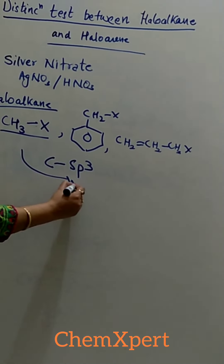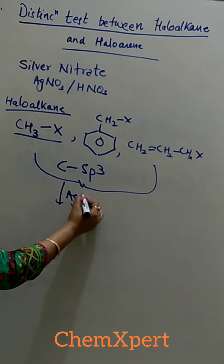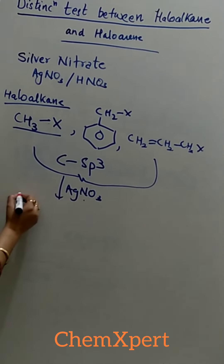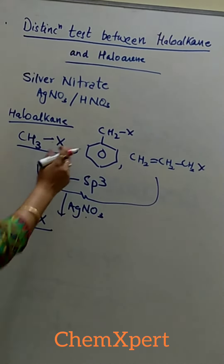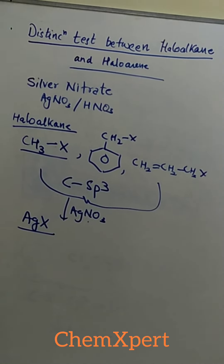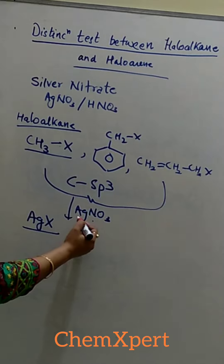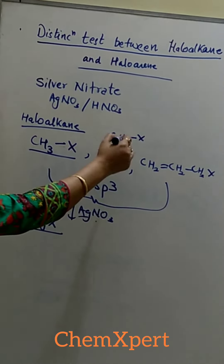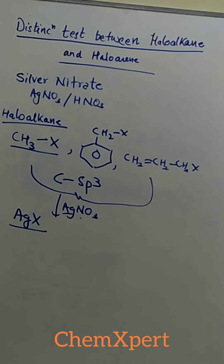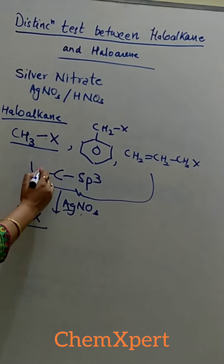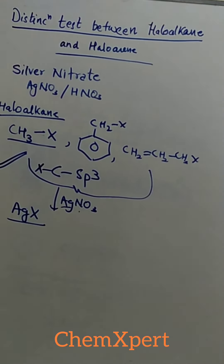Now in these three cases, if we separately treat them with AgNO3, then they will form the precipitate of AgX. CH3X will form AgX plus CH3NO3. In case of benzyl halide, it will form AgX and the whole compound with NO3, here also AgX. So any compound in which carbon attached halogen is sp3 hybridized will give positive AgNO3 test.